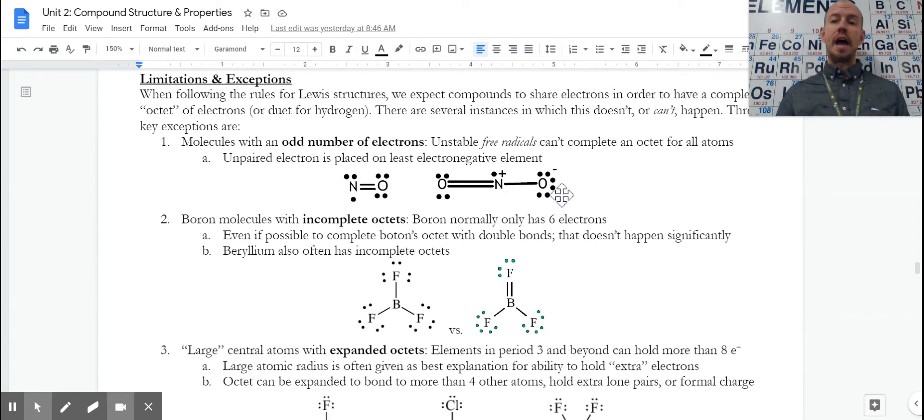They're often called free radicals because they've either lost or gained an electron or broken free from something. What would happen there is we would have to just do our best, get the closest to having eight without going over. If an element has fewer than eight, it's going to be the thing that attracts electrons the least.